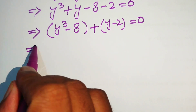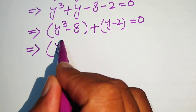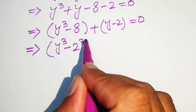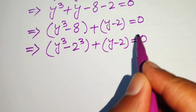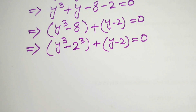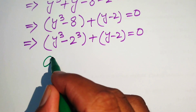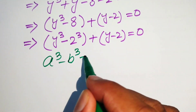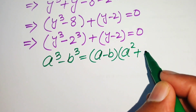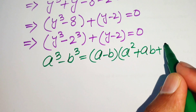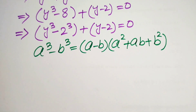We recognize that y cubed minus 8 can be written as y cubed minus 2 cubed, plus y minus 2 equals 0. We then apply the difference of cubes formula: a cubed minus b cubed equals a minus b, times a squared plus ab plus b squared.